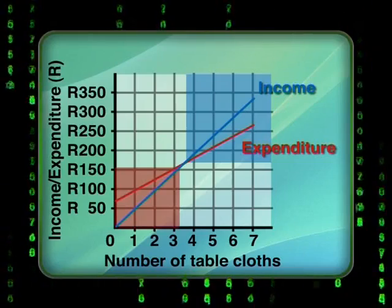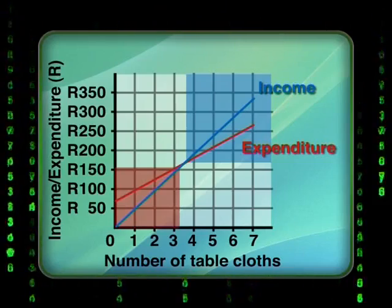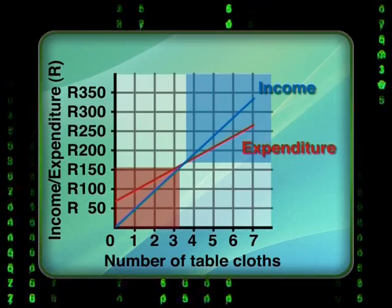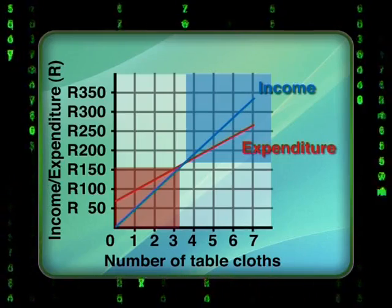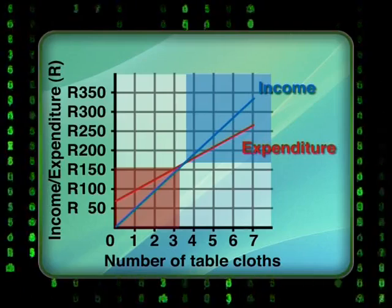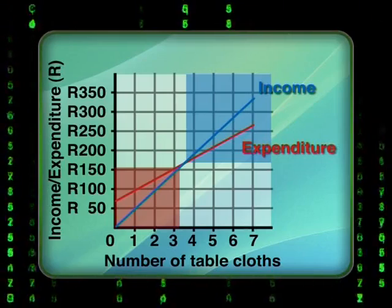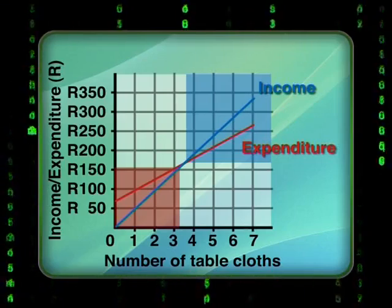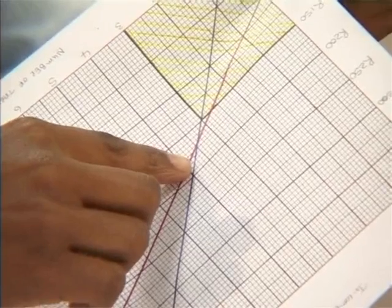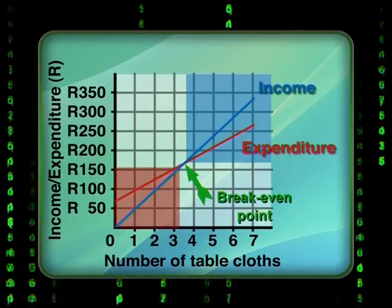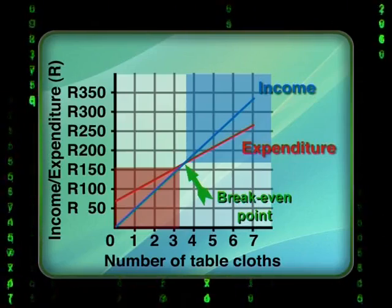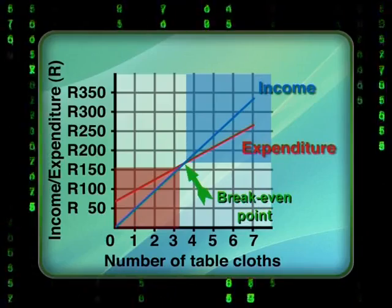That's right, Tato. The blue highlighted area on the graph represents the profit region, while the pale red area represents a loss. The income and expenditure lines cross over at a point between three and four tablecloths. Absolutely right, Tato. The point of intersection is where the income Madi receives is exactly equal to all her expenditure in making the tablecloths. Now, can you remember what we call that point? Yes. You told me that when the income is equal to the expenditure, this is called the break-even point.